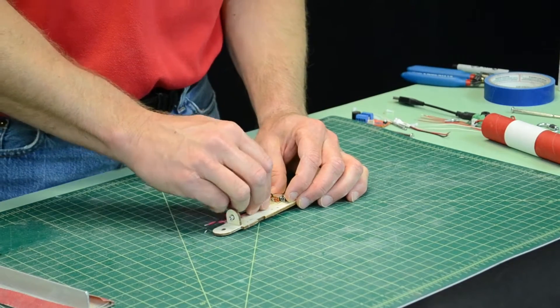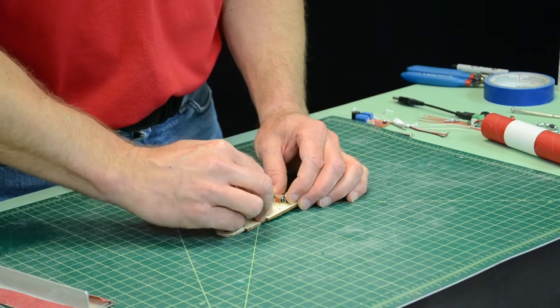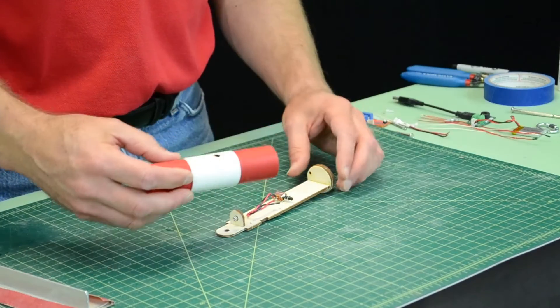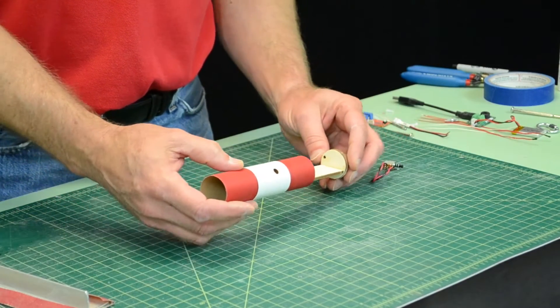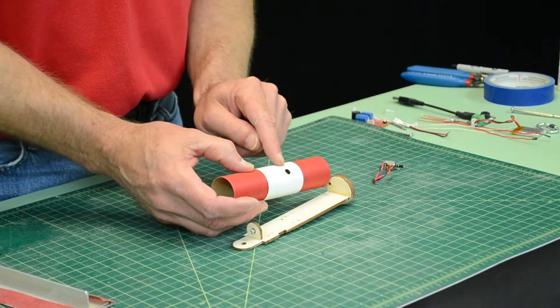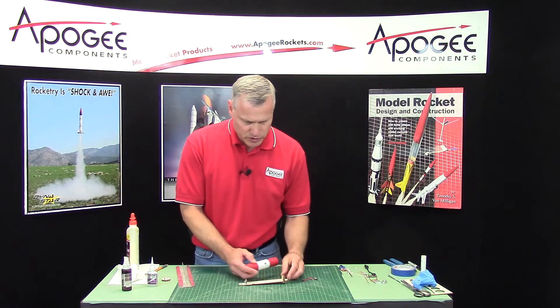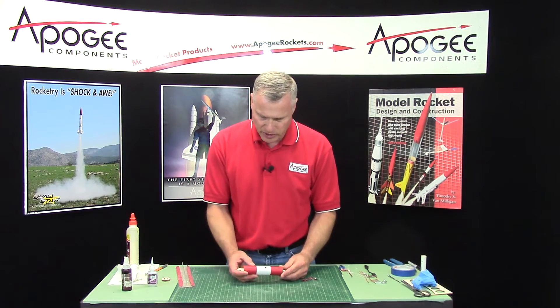Now we have to get the switch in the right spot. I'm going to bend my wires down and slide it into the body tube like this. When you orient this, see the little hole here? That goes towards the battery side of the board.